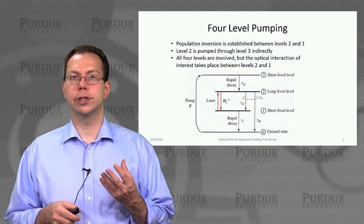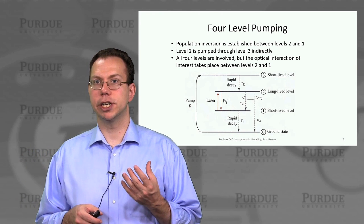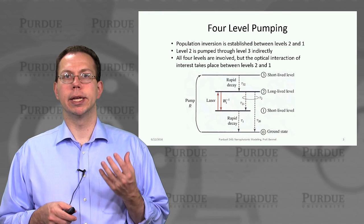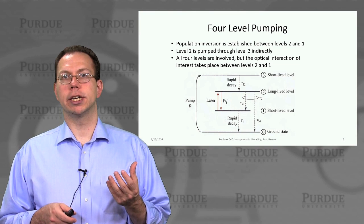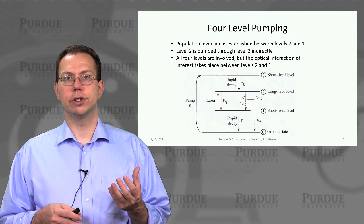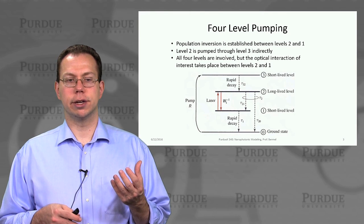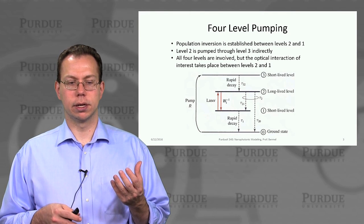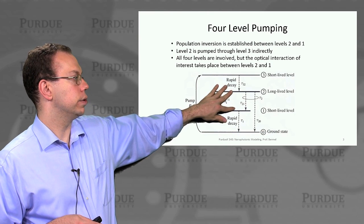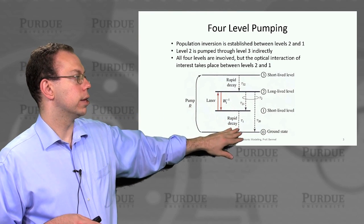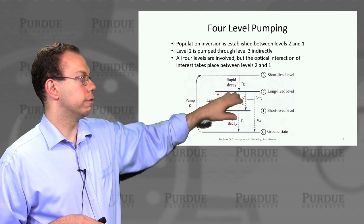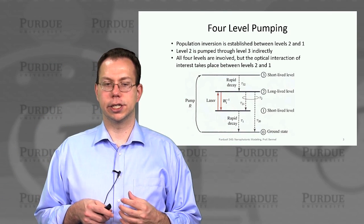In order to establish this population inversion, we need to have a clever scheme. You can do a three-level laser like a ruby, but it's actually usually more efficient to do a four-level pumping system. If we think of states one and two as our laser transition, then we have to have two states around it — one below and one above that key lasing transition.